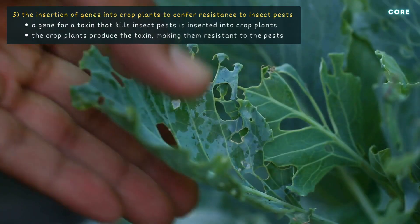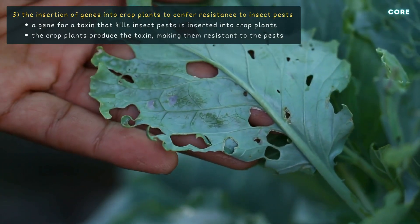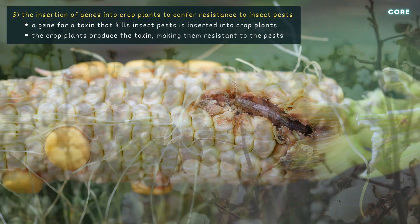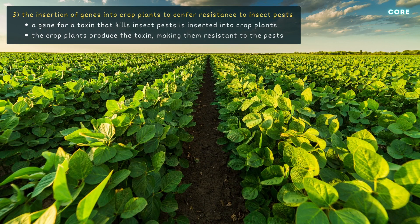The next example is the insertion of genes into crop plants to confer resistance to insect pests. A certain bacterium produces a toxin that kills insects like caterpillars that damage crops and reduce yields. The gene for this toxin has been isolated and inserted into the DNA of plants like maize, cotton and soy, making the crops resistant to the pests and eliminating the need for insecticides.